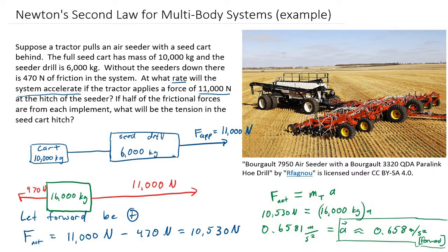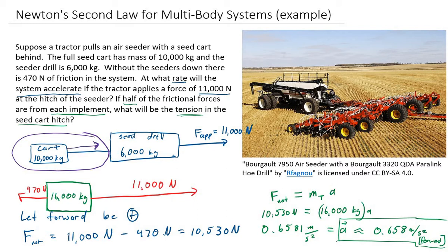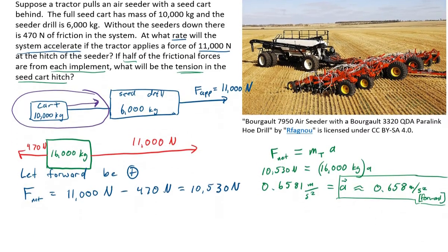Now for the second part: half of the 470 newtons of friction comes from each implement — half on the cart, half on the seed drill. We want the tension in the seed cart hitch — that is, how much force remains to apply to only the cart after the drill has absorbed its share. We're essentially looking at the second half of our system: what force is left after subtracting the force used by the seed drill?